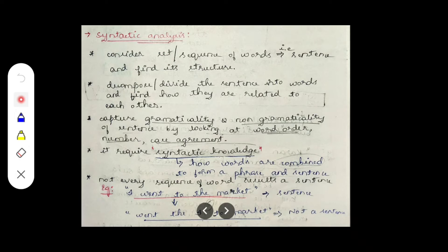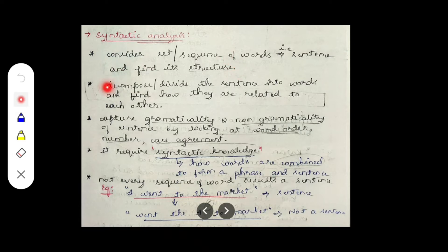If you consider a single word, it is just a word. But if you consider more than one word and arrange them in some manner, it is going to form a sentence. So the sequence of words is known as a sentence, and we have to find its structure — how the words are related and what the meaning of the sentence is.